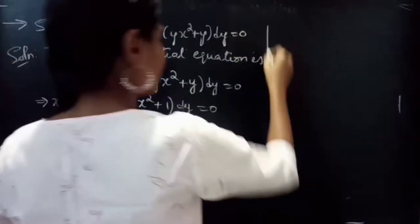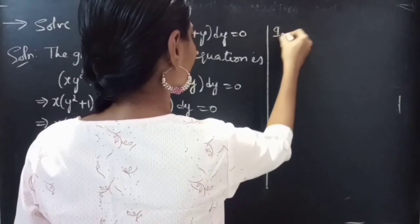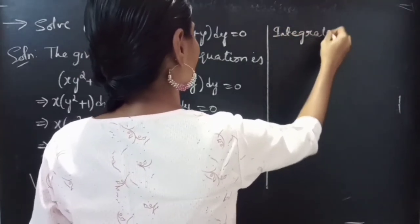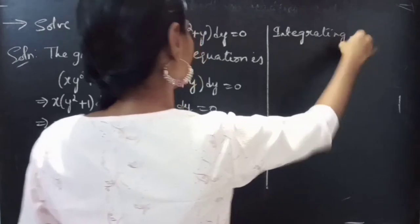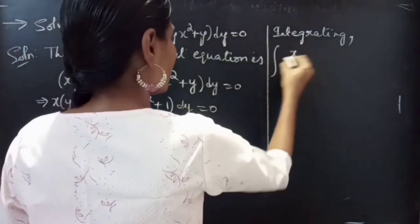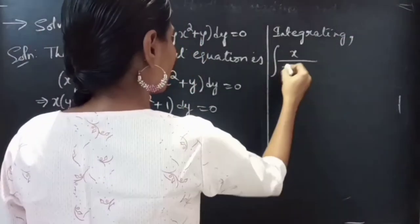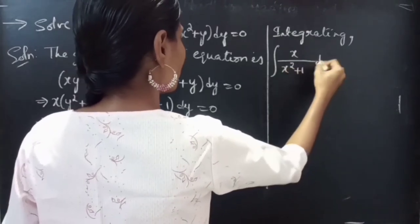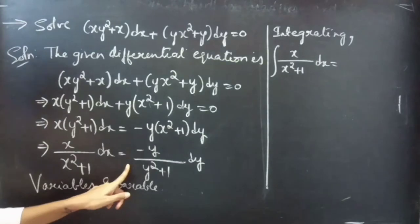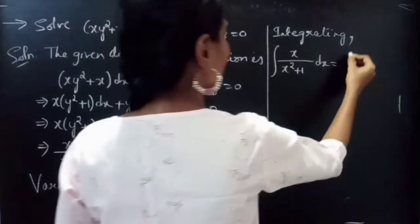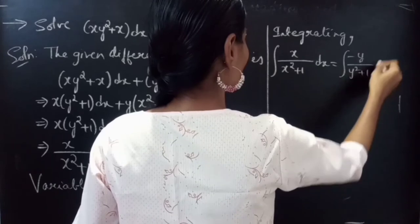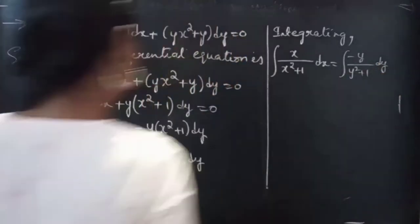Now we will integrate on both sides: ∫ x/(x² + 1) dx = ∫ −y/(y² + 1) dy.